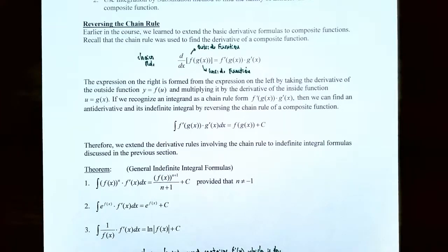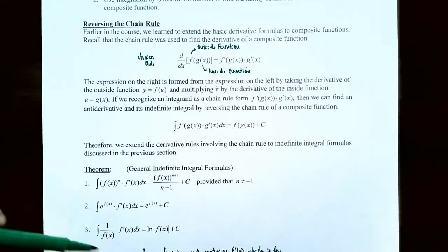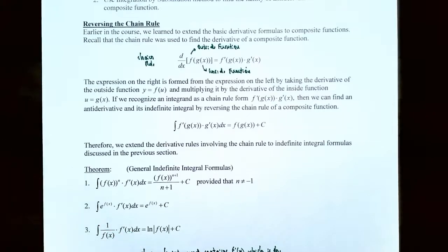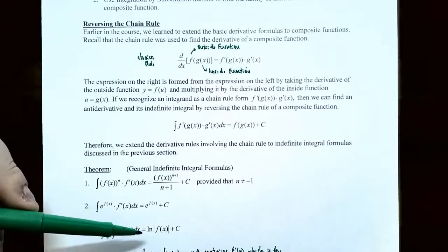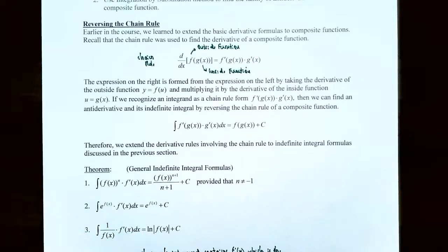The third formula looks like 1 divided by x dx, where x is replaced with f of x and f prime of x, the derivative of the inside function, occurs in the integrand. What was the antiderivative of 1 divided by x? It was natural log of the absolute value of x plus c. Now since x is replaced with f of x, the inside function, the antiderivative would be natural log of the absolute value of f of x plus c.